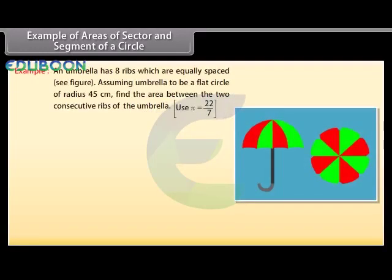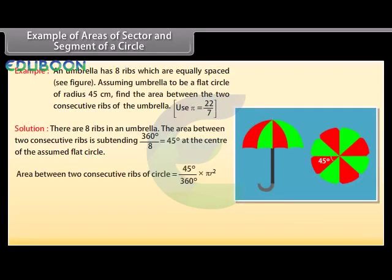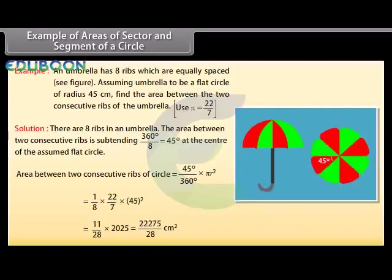Example: An umbrella has 8 ribs which are equally spaced (see figure). Assuming the umbrella to be a flat circle of radius 45 centimeters, find the area between two consecutive ribs. Use π = 22/7. There are 8 ribs, so the area between two consecutive ribs subtends 360°/8 = 45° at the center. Area between two consecutive ribs = (45°/360°) × πR² = 22,275/28 centimeters squared.